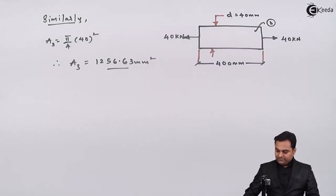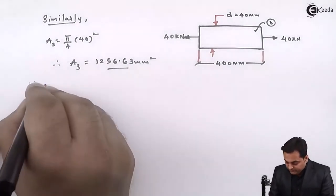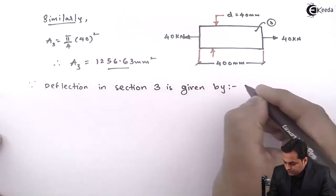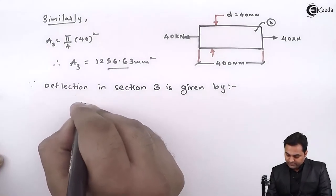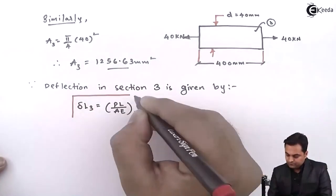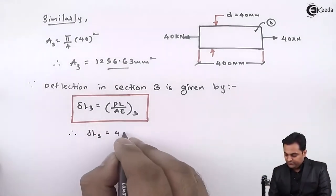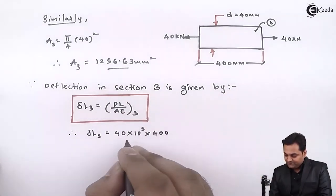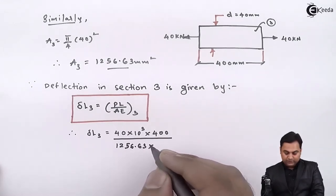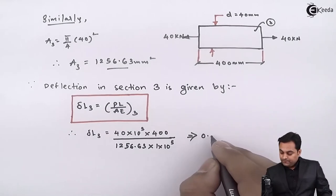After getting the area for the third section, I calculate the deflection. Delta L3 = PL/AE = (40 × 10³ × 400) / (1256.63 × 1 × 10⁵) = 0.127 mm.